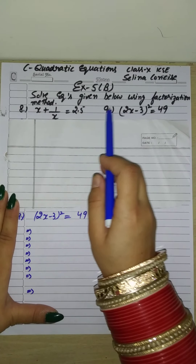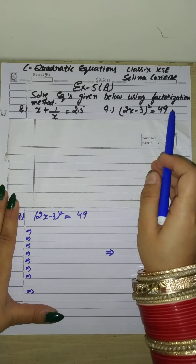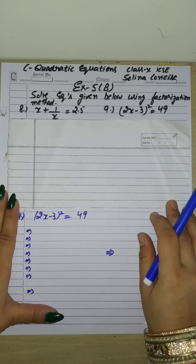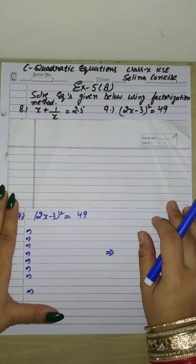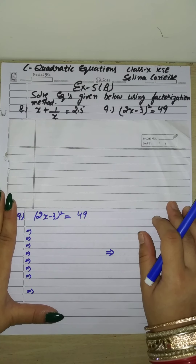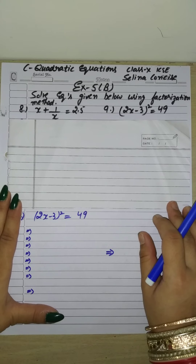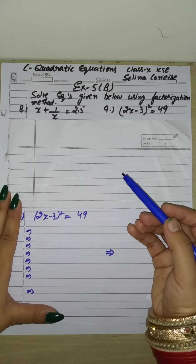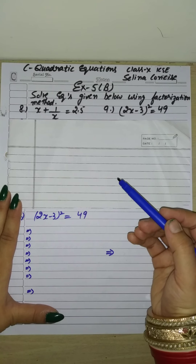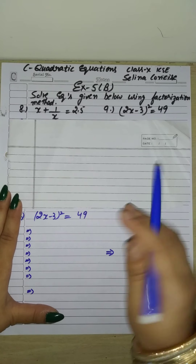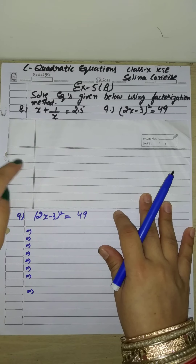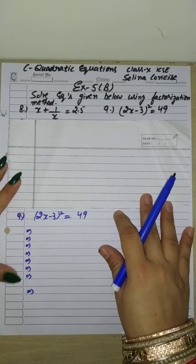Solve equations given below using the factorization method. I have added a separate video on the factorization method — you can find factors very easily using it. You can also see the link in the description. So first of all, we will solve the 9th sum and 8th sum.